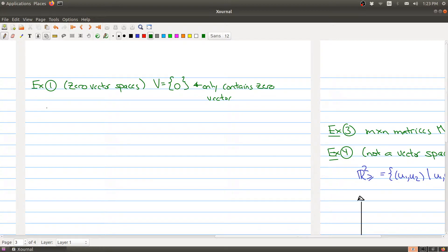What is the addition and scalar multiplication? The addition is simply zero plus zero is zero, and the scalar multiplication in this case is c times zero will be equal to zero.